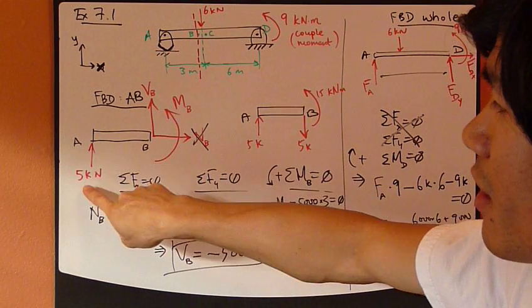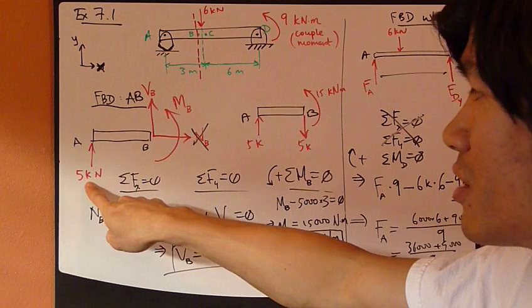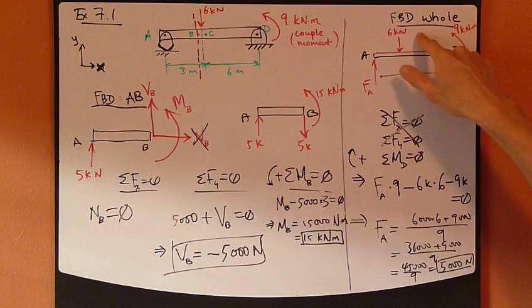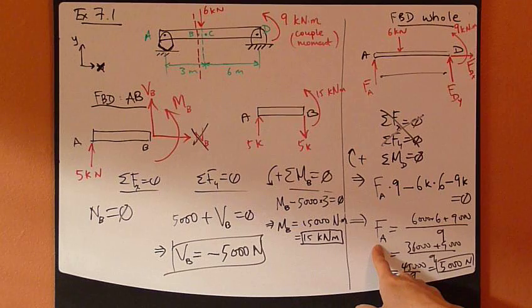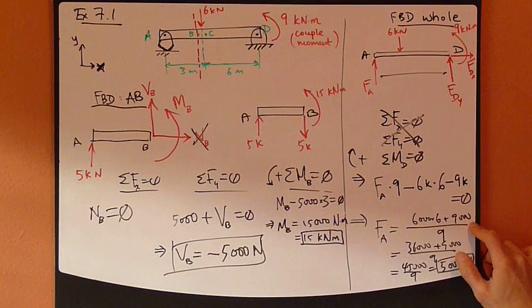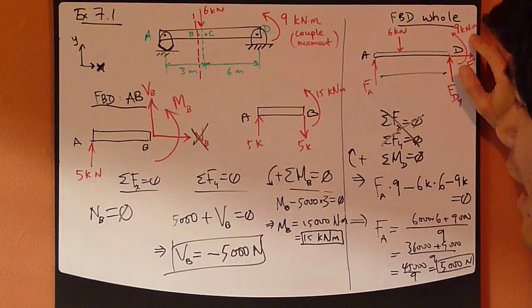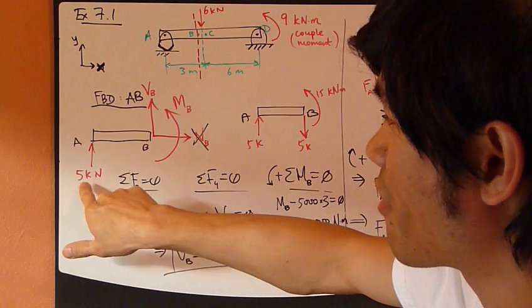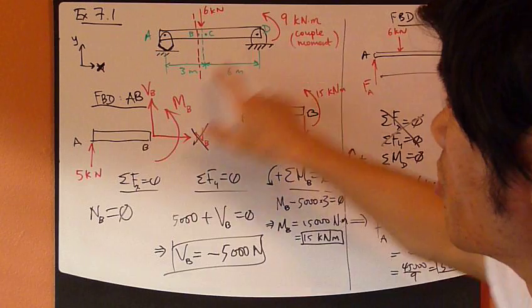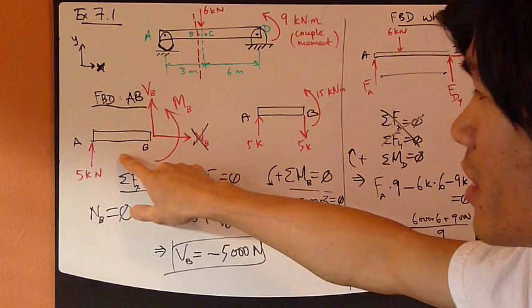And that is because this 5,000 newton force, this reaction force at A, the fact that it's 5,000, is because we have already taken into consideration of this couple moment right here in this calculation looking at the whole thing's free body diagram and figuring it out at A. I have used this 9,000. I have taken into consideration.